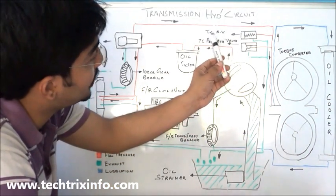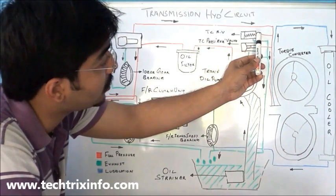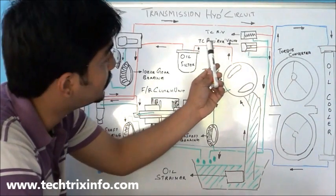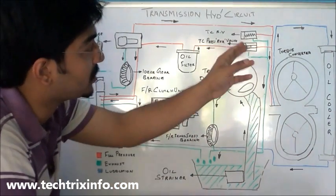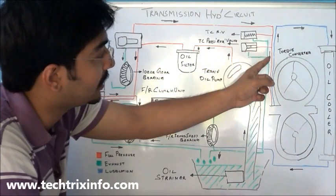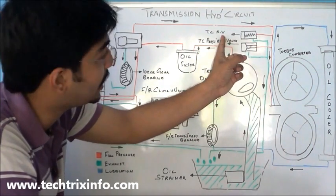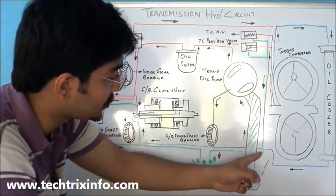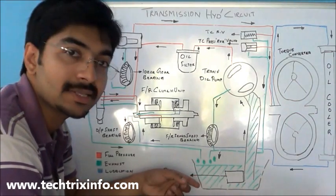Here we have the torque converter relief valve. That line enters the torque converter relief valve and also the torque converter pressure regulating valve. If excess pressure is being created, it is released through the green exhaust line. If additional pressure builds up, the torque converter relief valve releases that pressure back towards the transmission oil sump.